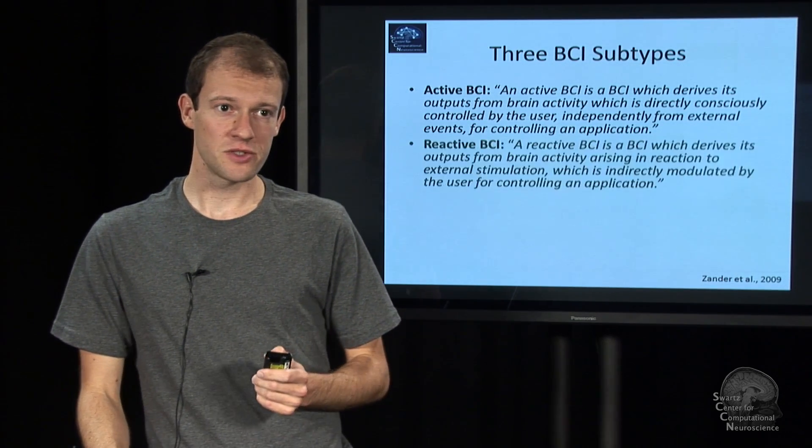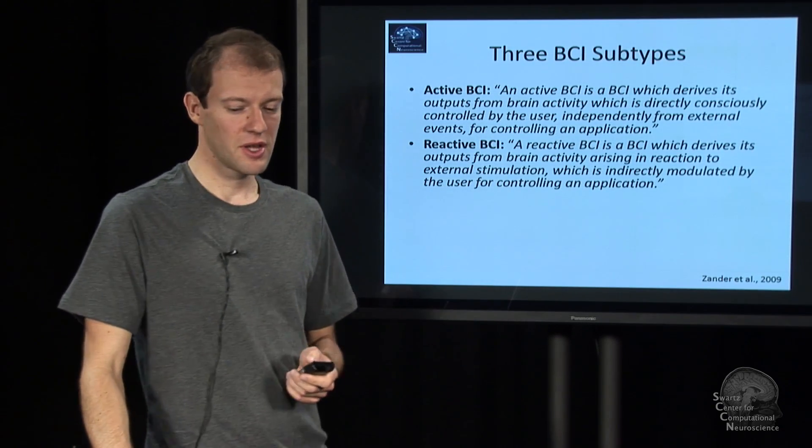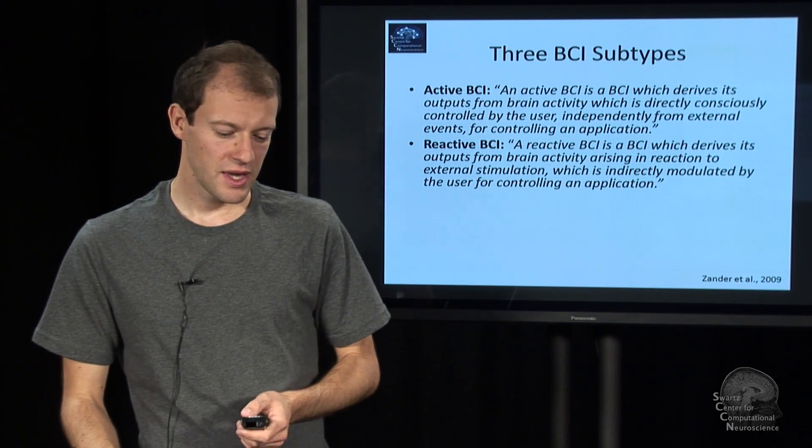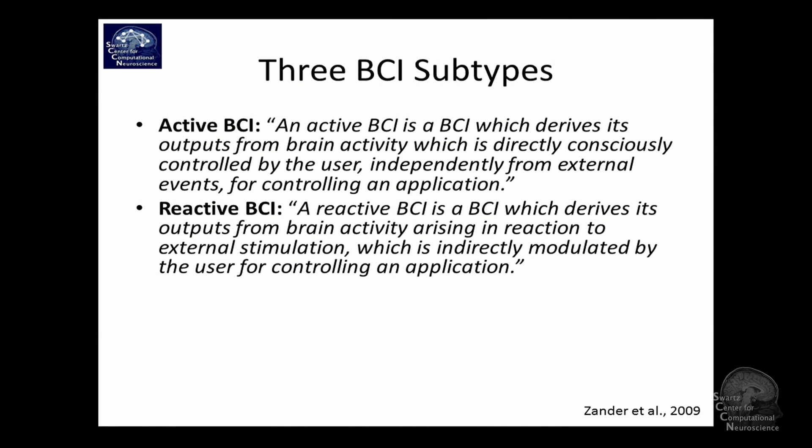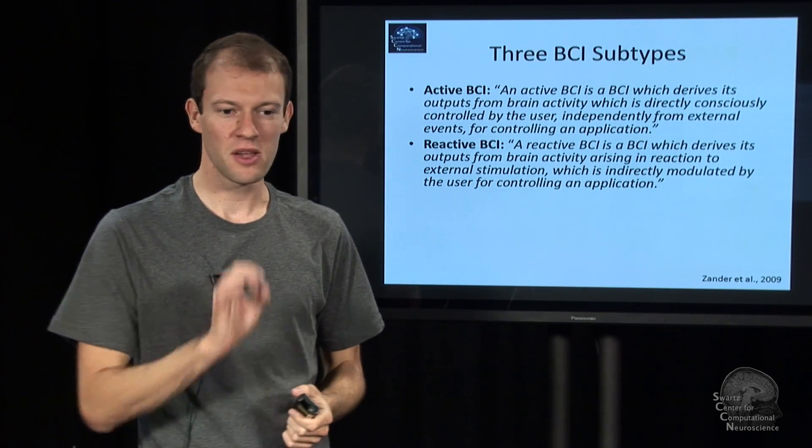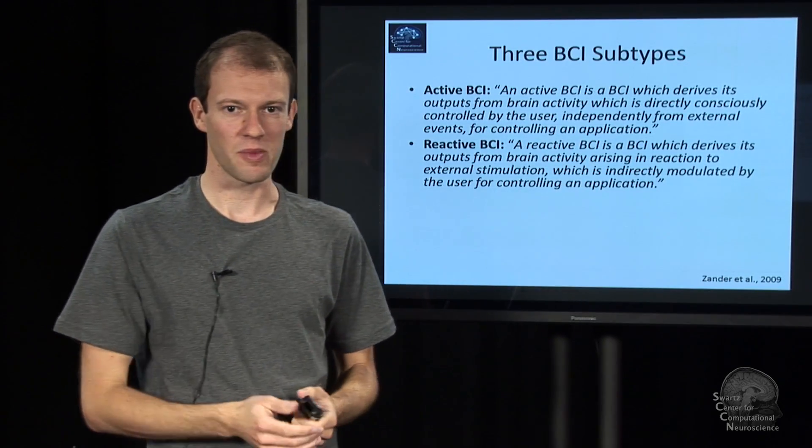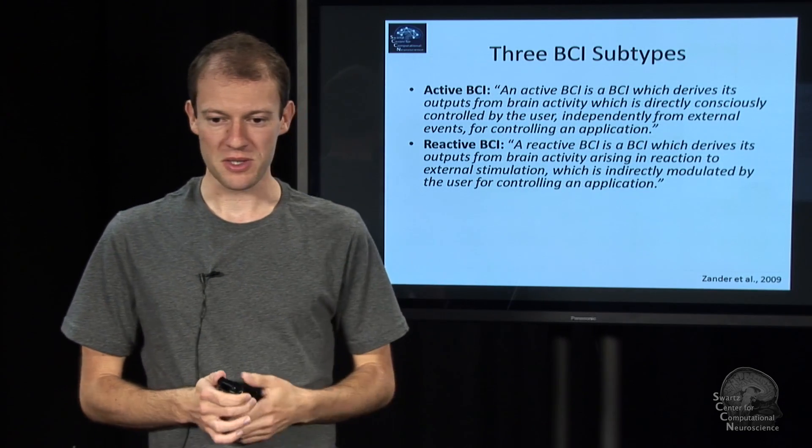The reactive BCI is fundamentally different because what you do here is you still control something and you still focus on it consciously in some sense. And you still have voluntary action. But you utilize brain processes that happen in response to external events. So say you focus on a flickering light and the brain-computer interface analyzes your brain responses to this input. So you are always dependent on this thing happening in your environment. But because these things are very robust, they tend to work pretty well if the circumstance is at all for that.